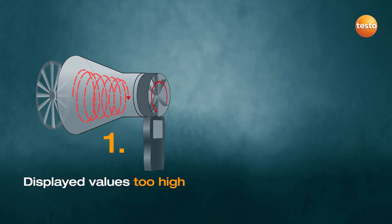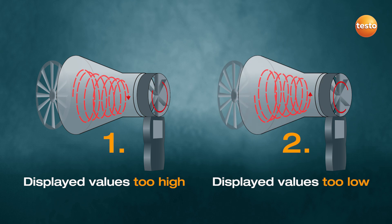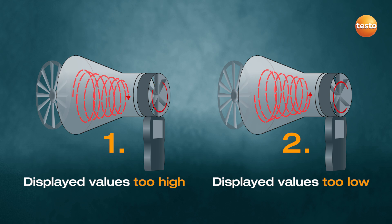Let's take a closer look at what happens. First: the direction the swirl rotates is the same as that of the vane. What happens? The flow hits a larger cross-sectional area of the individual blades of the vane, making it accelerate too fast. Second: the direction the swirl rotates is the opposite to that of the vane. What happens? The flow passes between the individual blades of the vane, meaning it doesn't accelerate properly.